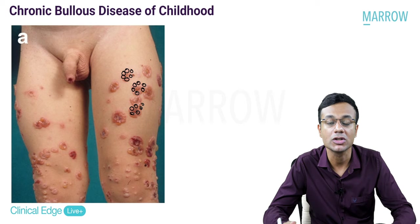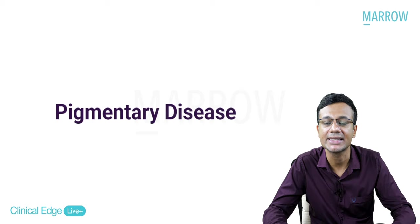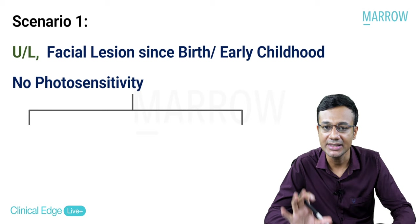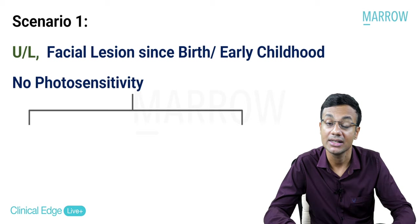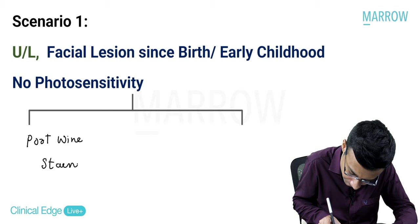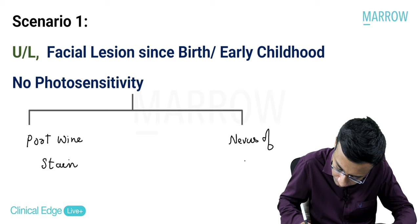Now some clinical scenarios in pigmentary disorders. First scenario: a unilateral lesion located on the face since early childhood or birth with no photosensitivity. Two important differential diagnoses: number one, port wine stain; number two, nevus of Ota.